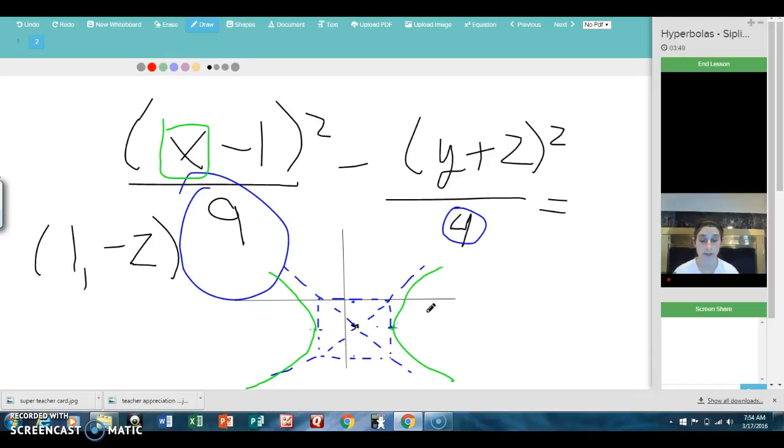One of the mistakes that students make all the time with these, and it drives teachers crazy, is they'll just put a little thing there, and a little thing here. And this would be wrong for two reasons. First, it doesn't touch the vertex. And second, it doesn't go along the asymptote.